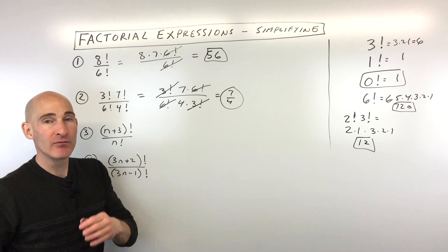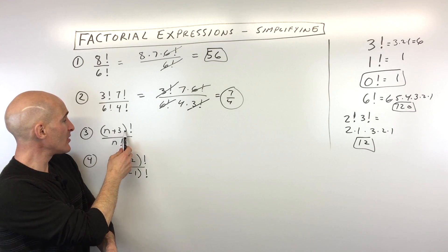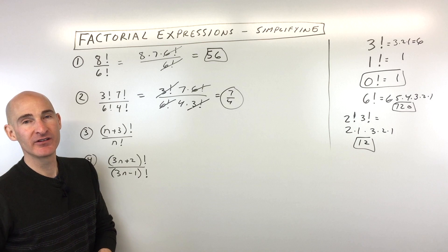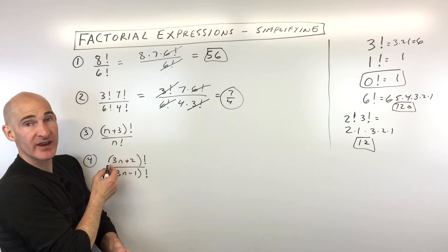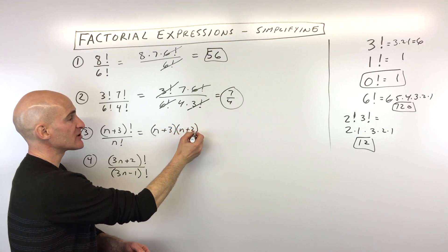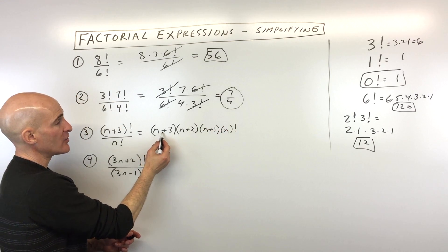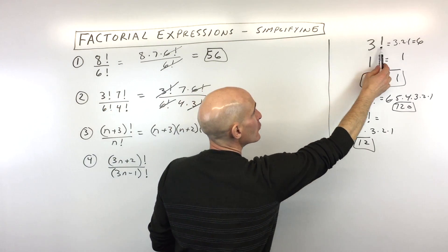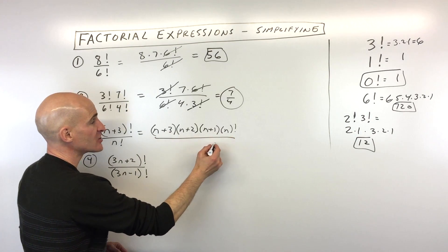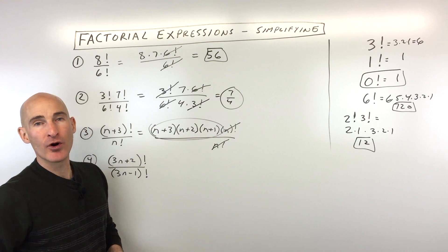So again, you start with the larger one and count down by one at a time. Let's go to number three — this one is more of a variable expression. We've got the quantity n plus three factorial over n factorial. Which one is larger, the numerator or the denominator? If you said the numerator, you're absolutely right, because this is three more than n, whereas the denominator is just n. So we start with the larger one, n plus three, and multiply down: n plus two, n plus one, and n factorial. I keep subtracting one each time — just like three factorial goes three, two, one — until I've got a match with the numerator and the denominator. This way I can cancel those, and we're just left with this quantity, which you can foil out and multiply on your own.